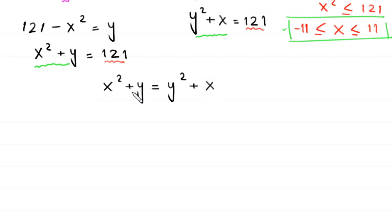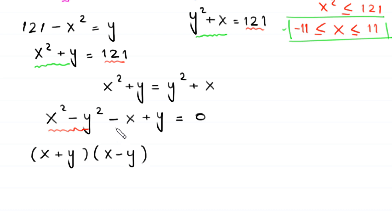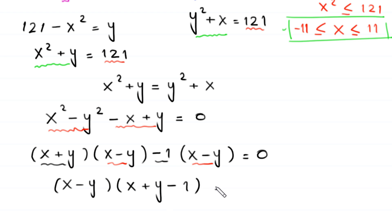Moving everything to the left-hand side: x squared minus y squared minus x plus y equals 0. Factoring x squared minus y squared as (x plus y)(x minus y), and factoring negative 1 from the remaining terms gives negative 1 times (x minus y). So (x minus y) is a common factor, and we get: (x minus y)(x plus y minus 1) equals 0.